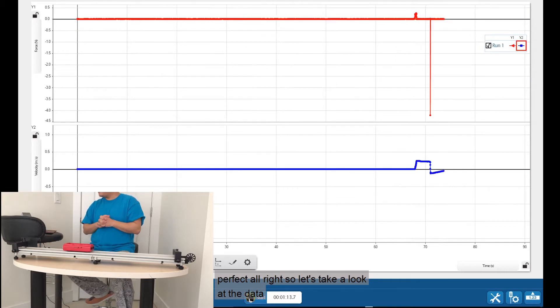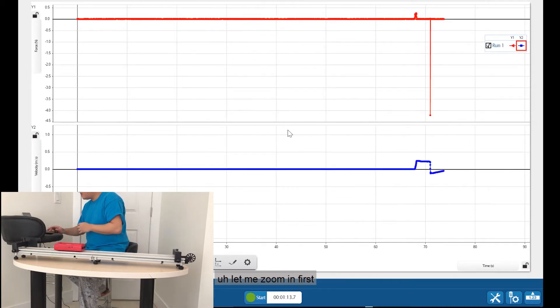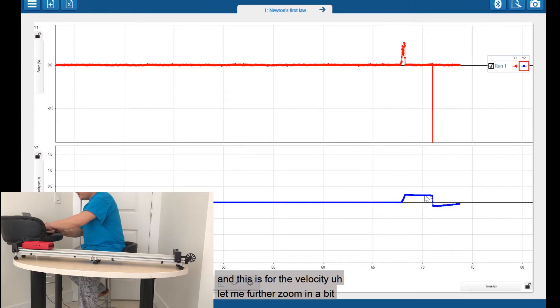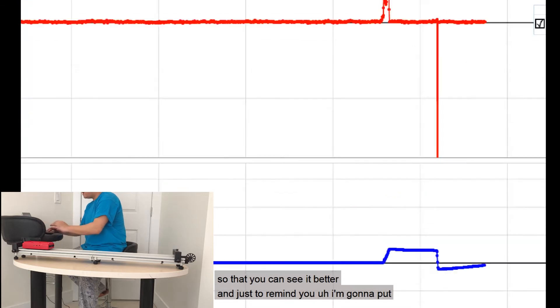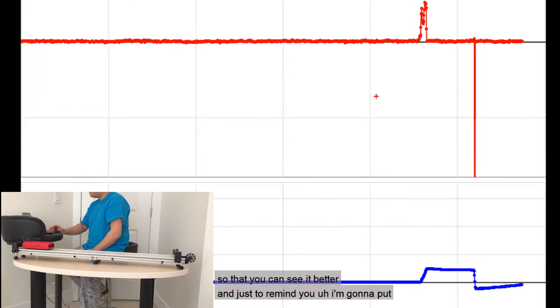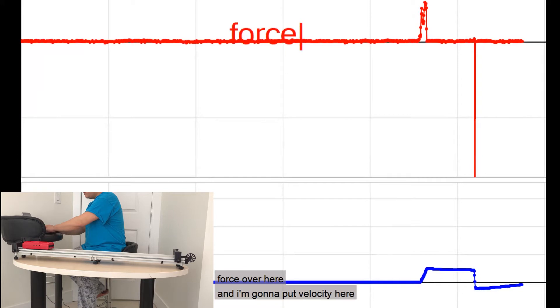Perfect. So let's take a look at the data. Let me zoom in first. So this is the graph for the force and this is for the velocity. Let me further zoom in a bit so that you can see it better. And just to remind you, I'm gonna put force over here and I'm gonna put velocity over here.